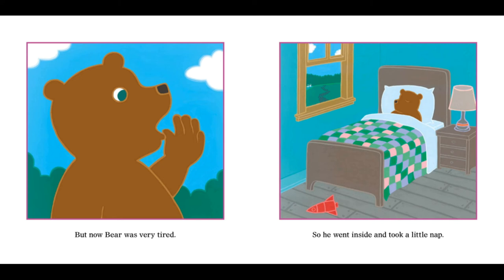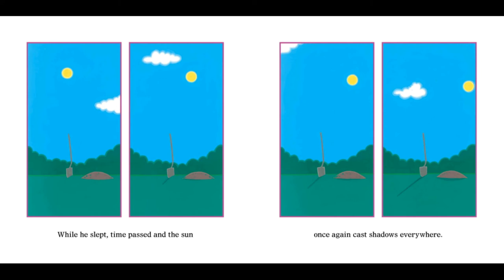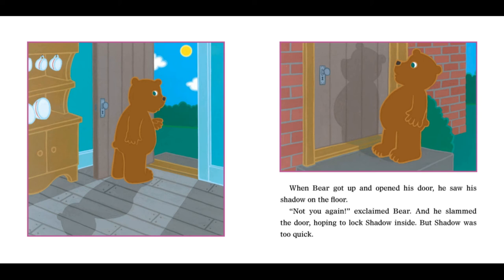But now Bear was very tired, so he went inside and took a little nap. While he slept, time passed and the sun once again cast shadows everywhere. When Bear got up and opened his door, he saw his shadow on the floor. Not you again, exclaimed Bear. And he slammed the door, hoping to lock Shadow inside, but Shadow was too quick.